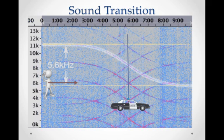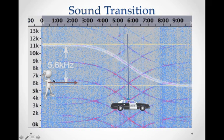Notice from our sound transition plot that if the source was fixed — a siren or police car — and you were the observer moving, then as you went through, the sound would transition down again. The regular or normal sound would be right in the middle; these would be the higher pitch sounds and these would be the lower pitch sounds.